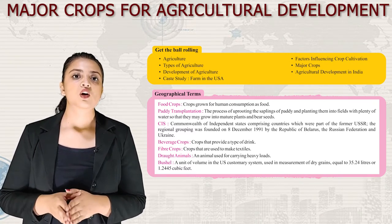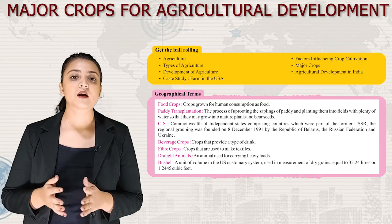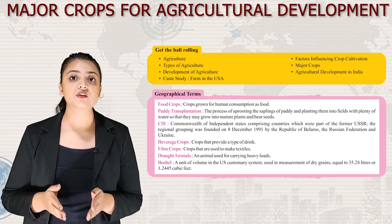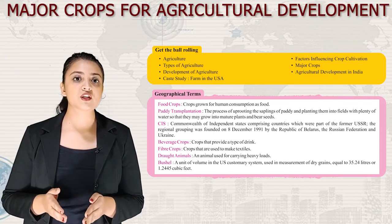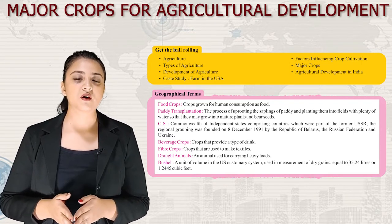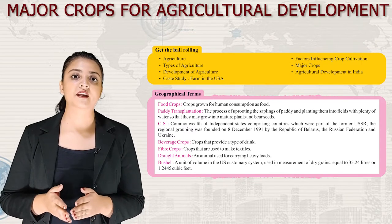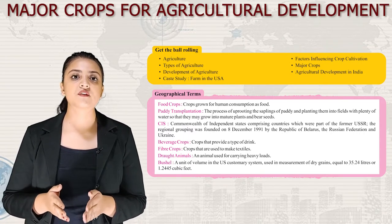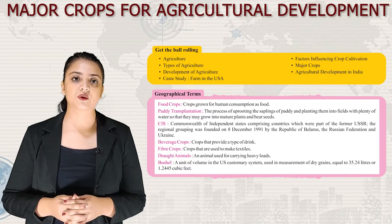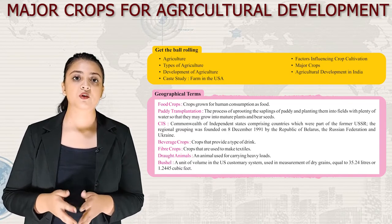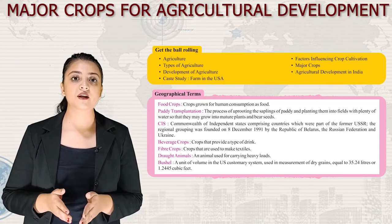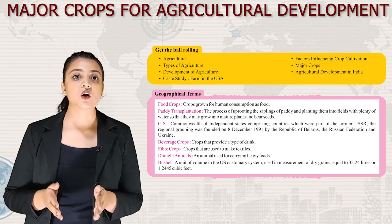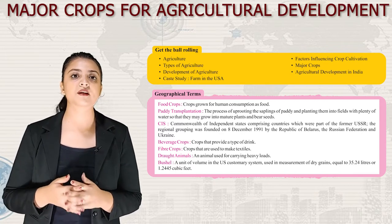CIS: Commonwealth of Independent States, comprising countries which were part of the former USSR. The regional grouping was founded on 8 December 1991 by the Republic of Belarus, the Russian Federation and Ukraine. Beverage Crop: A crop that provides a type of drink. Fiber Crop: Crops that are used to make textiles.